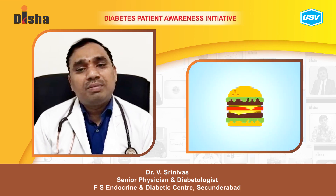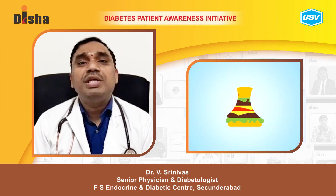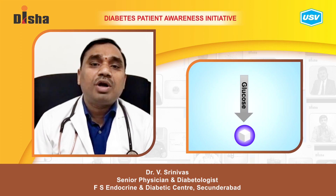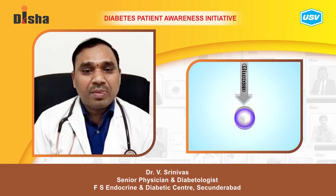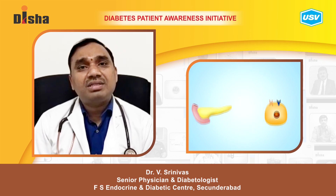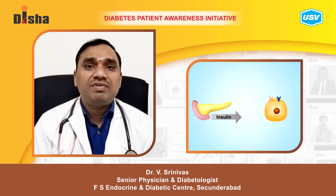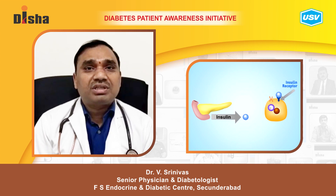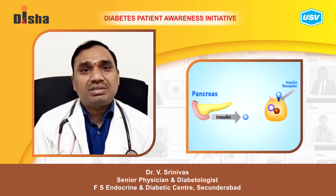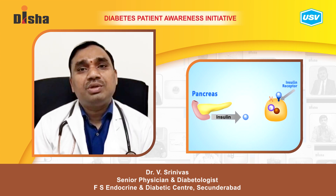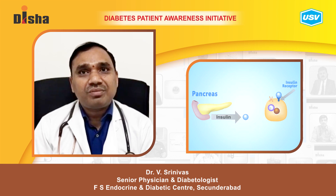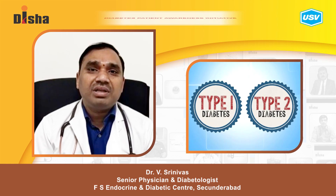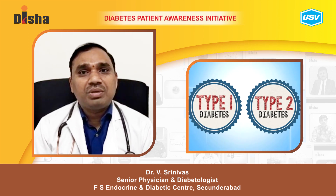As you all know, blood glucose is the main source of energy and glucose comes from what you eat. The pancreas in the body is an organ which produces insulin, which converts or pushes glucose into your cells. There are two different types of diabetes: type 1 and type 2.